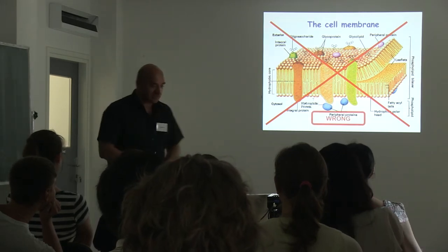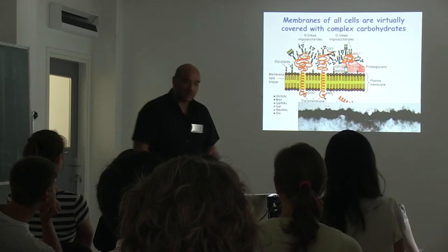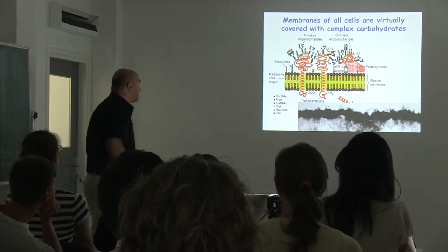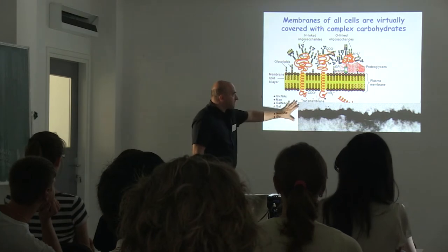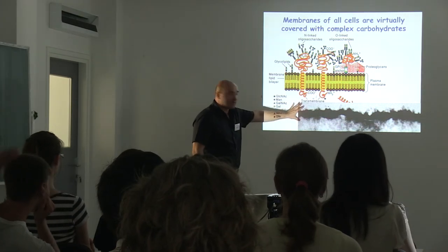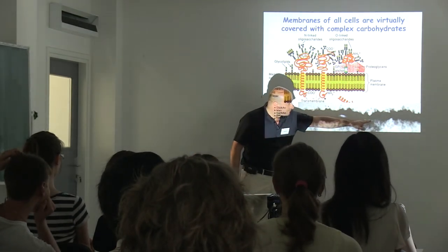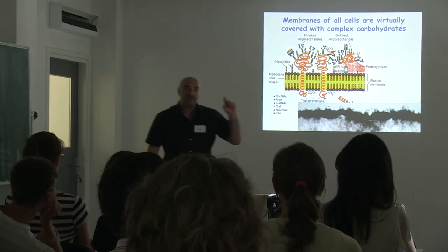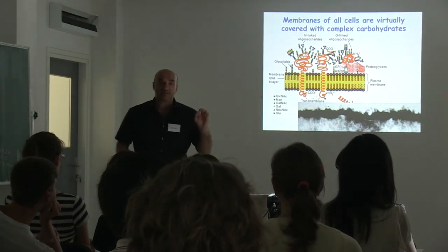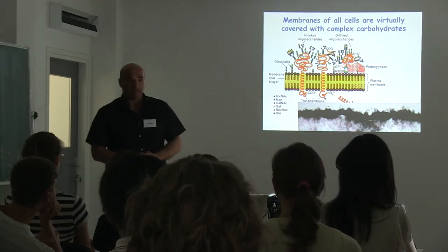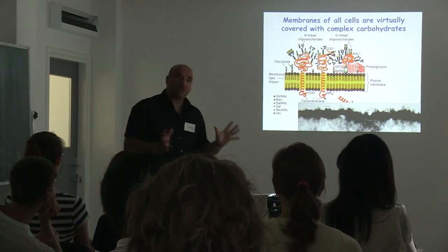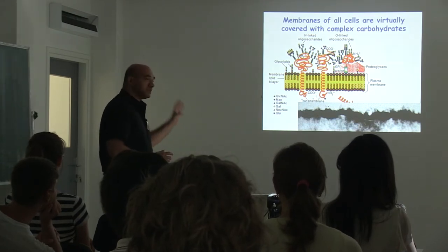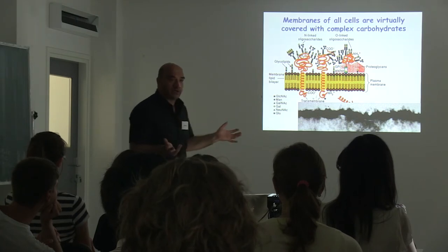Glycans do not look like that. When you look under the electron microscope, this is a cell membrane. This tiny little white part is the lipid bilayer. And this thick black coating — these are the glycans. Our cells are coated in glycans.